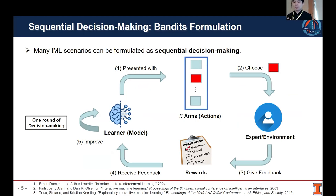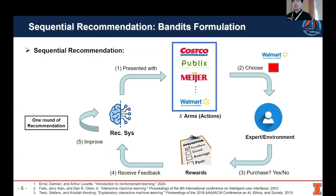In a round, the learner is presented with key actions, arms, or items, and then the learner is required to select one arm according to some policy. After pulling this arm, the learner can observe the corresponding reward by interacting with the expert or environment. With this feedback or reward, the learning model can improve itself based on these feedbacks. Many recommendation scenarios can be considered as a sequential recommendation, where each recommendation action is taken sequentially and interactively. Thus, sequential recommendation can be naturally formulated as a process of sequential decision-making.